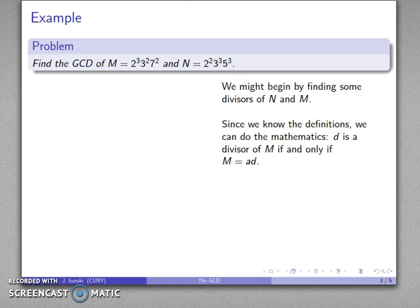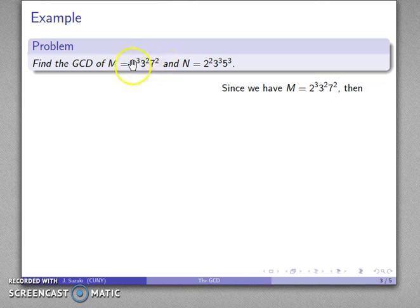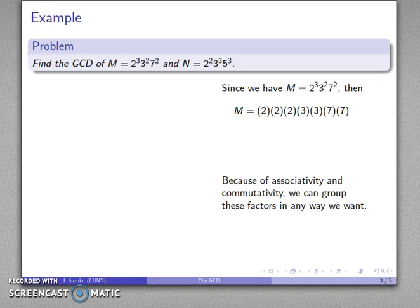Let's see what we can find. Because we know our definitions, we can do the mathematics. A divisor d is a divisor of m if and only if m is the product of d and something else. So I know what m is as a product: 2 to the third, 3 to the second, 7 squared. Because of associativity and commutativity, we can group these factors any way we want — we can write this product of 2s, 3s, and 7s in any order. The only thing we can't do is drop any out or write in new ones.